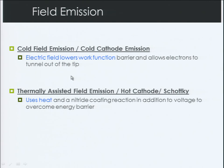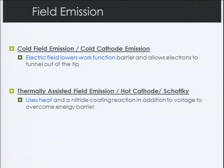There are also different types of field emission. Cold field or cold cathode emission is where the electric field lowers the work function, allowing electrons to tunnel out of the tip. There's also thermally assisted field emission — also called hot cathode or Schottky — which uses heat and a thin nitride coating reaction, in addition to the extraction voltage, to overcome the energy barrier. These are subtle differences between types of FESEM.